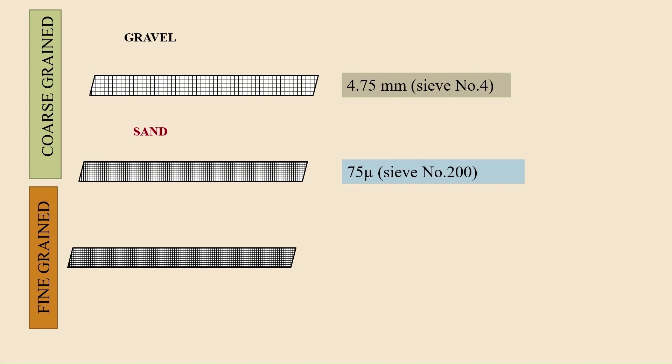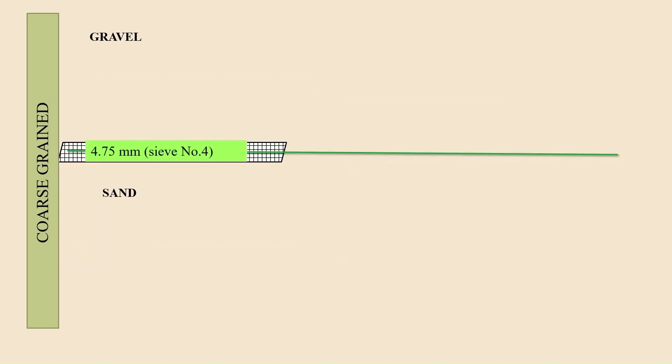In the case of fine-grained soil, again we have two categories: silt and clay. For classifying them, we use the particle size of 2 microns. If more than 50% of the particles are greater than 2 micron size, then we call it silt. And if more than 50% of the particles are smaller than 2 micron size, then we call it clay. This gives you the broad classification of coarse and fine-grained soil. Now let us discuss the coarse-grained soil type in detail.